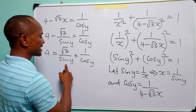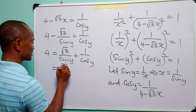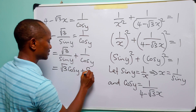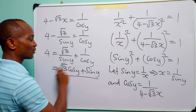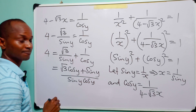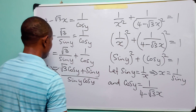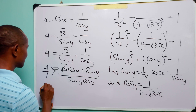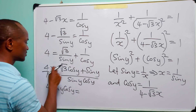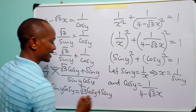The next step is to combine these two fractions into one single unit. When we do that, cos y times root three is root three cos y, plus sin y times one is sin y, divided by sin y times cos y. This remains equal to four. Then we cross multiply, and what we have is four sine y cos y is equal to root three cos y plus sin y.